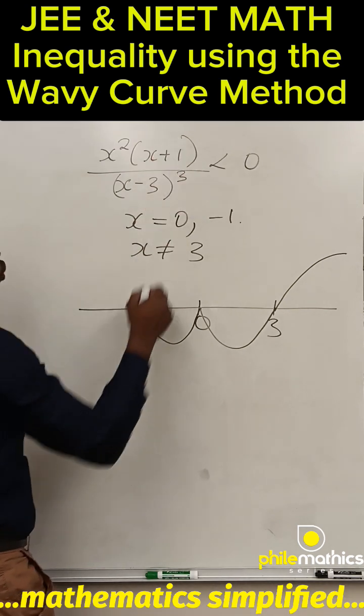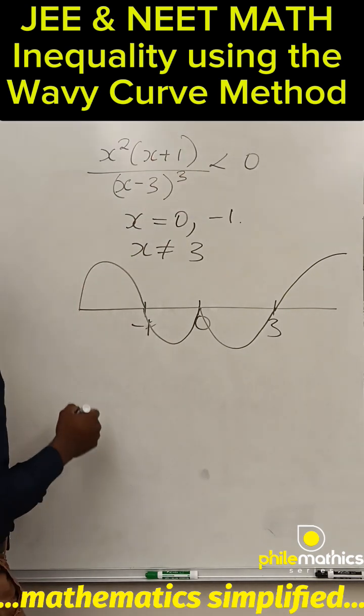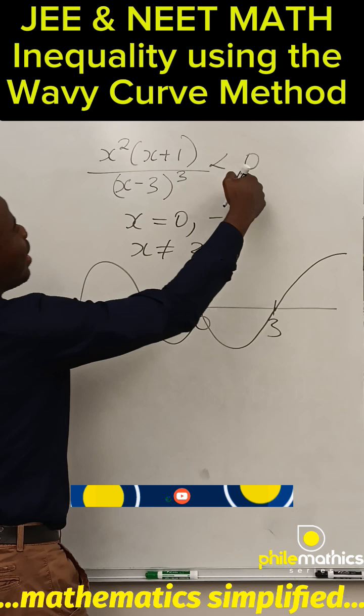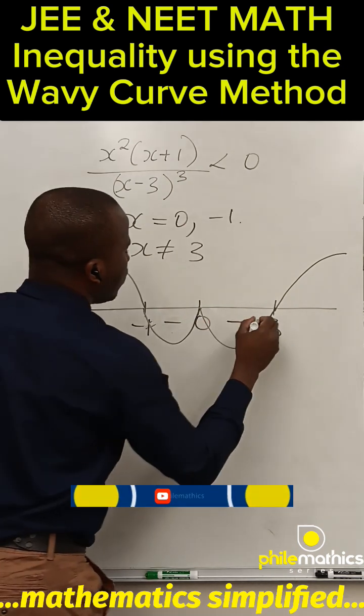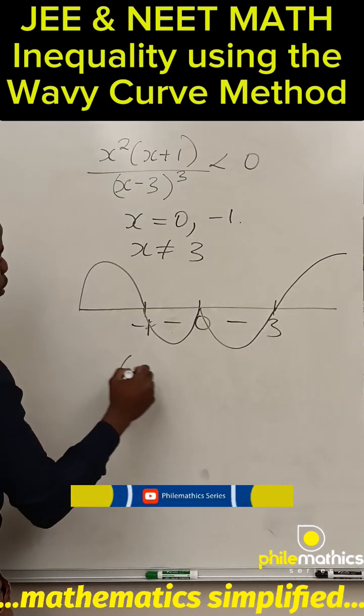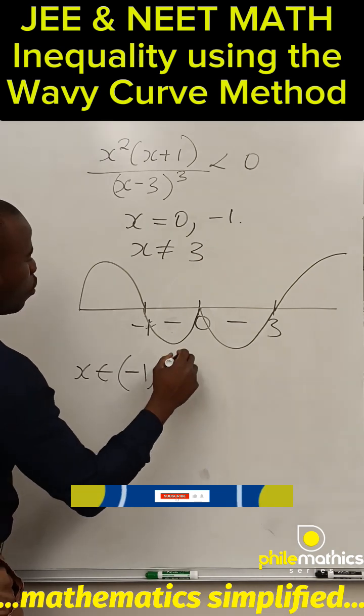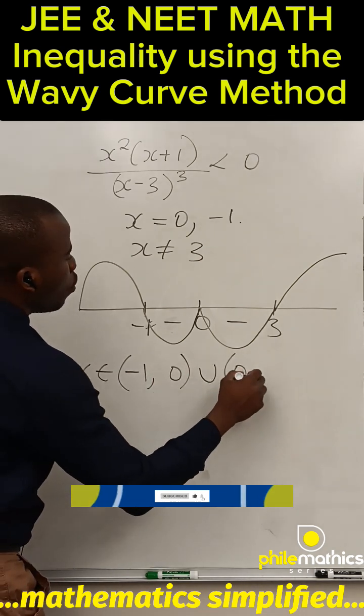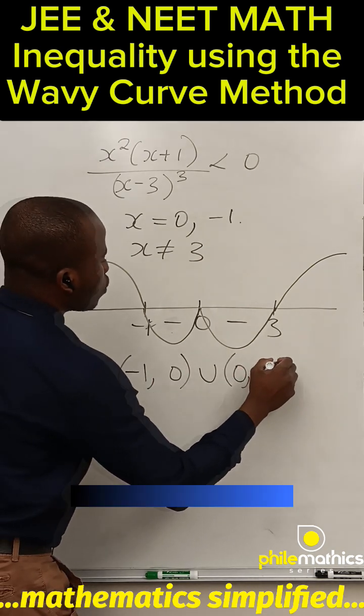At minus one it is odd, it crosses. So we're looking for the values of x that are less than zero. This is x in (-1, 0) union (0, 3).